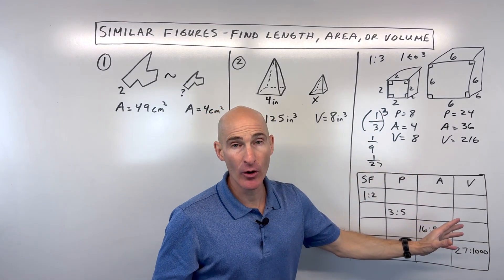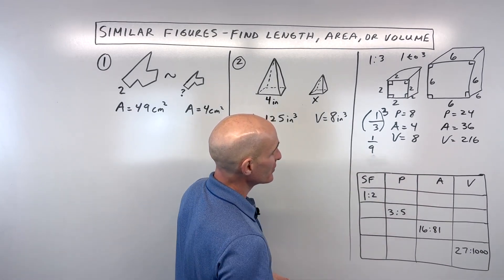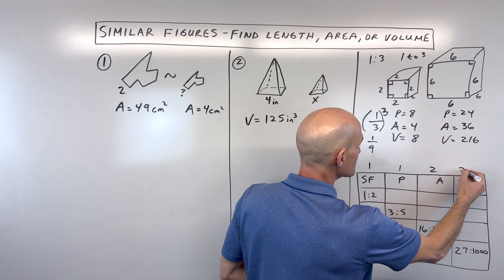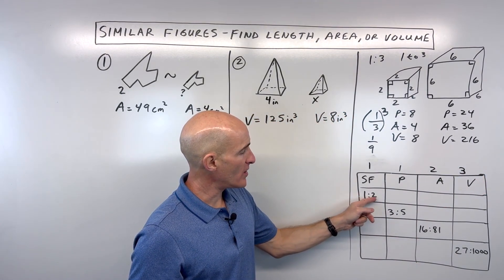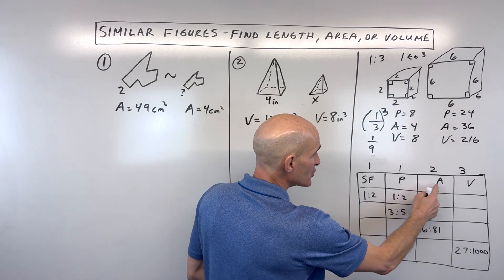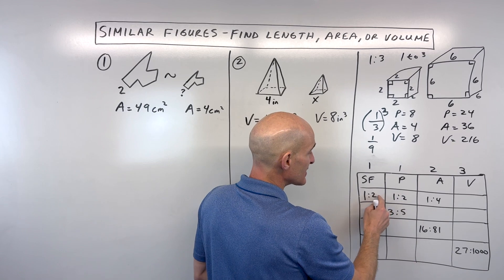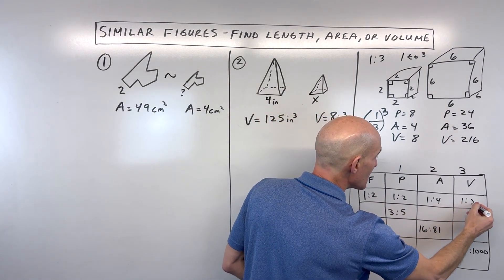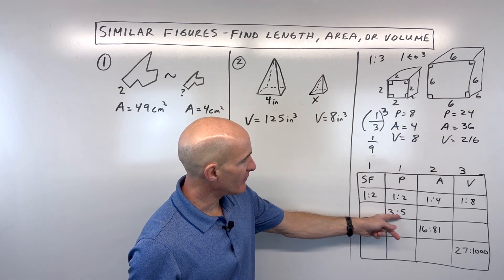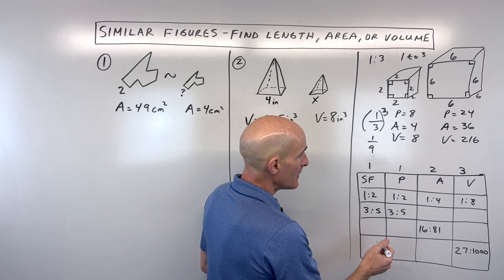Here's a table to solidify this. The scale factor is one-dimensional, like the perimeter. If the scale factor is 1 to 2, the perimeter ratio is also 1 to 2. For areas, square the scale factor: 1² to 2² gives 1 to 4. For volumes, cube it: 1³ to 2³ gives 1 to 8. If given the perimeter ratio — say 3 to 5 — the scale factor is also 3 to 5.